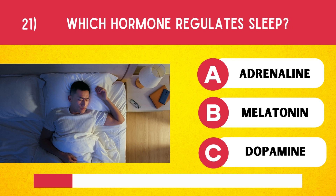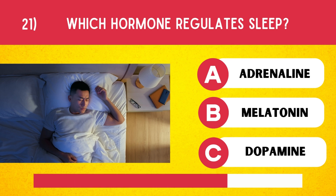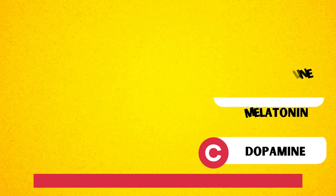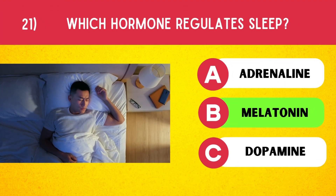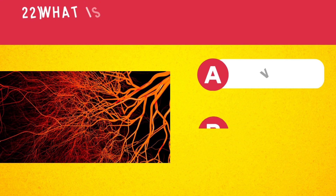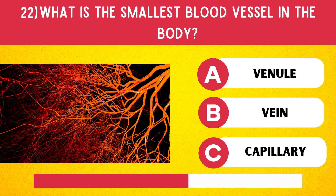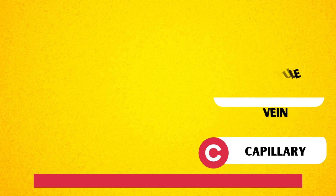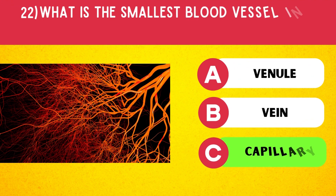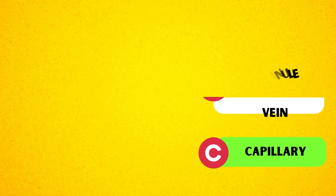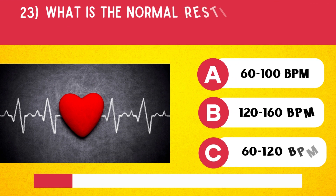Which hormone regulates sleep? Melatonin. What is the smallest blood vessel in the body? Capillary.